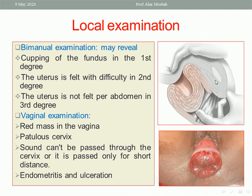On bimanual examination, findings depend on the grade of inversion. In first degree, there is just cupping of the fundus, but the uterus can still be felt. In second degree, the uterus can be felt with difficulty because it has reached the cervical canal. In third degree, the uterus cannot be felt at all on bimanual examination because it is completely outside.